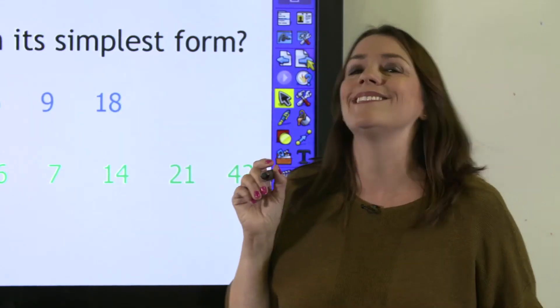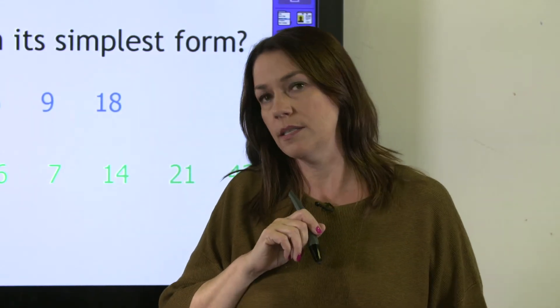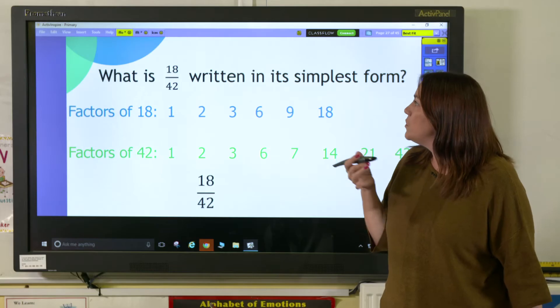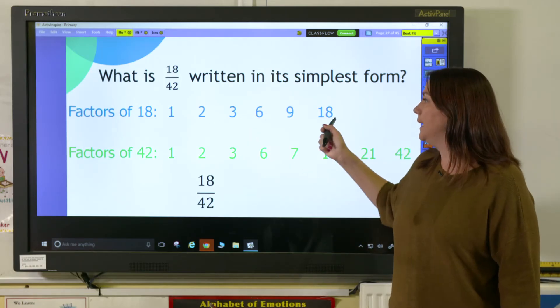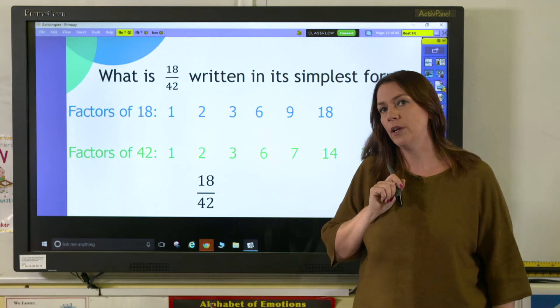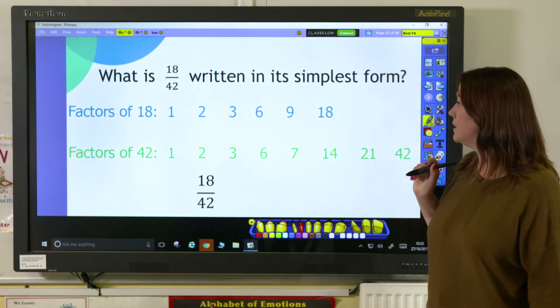Finding the highest common factor is essential when you're simplifying fractions. Here I'm asked what is 18/42 in its simplest form. I've written out the factors of 18 and the factors of 42, and here again we can see that we have some common factors.